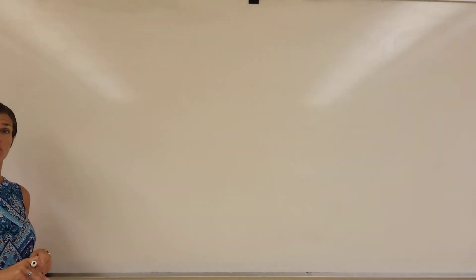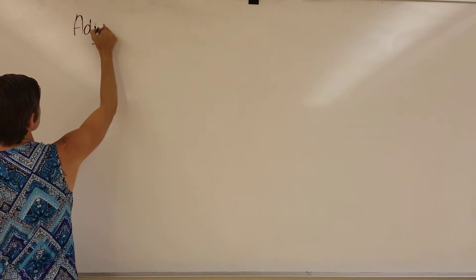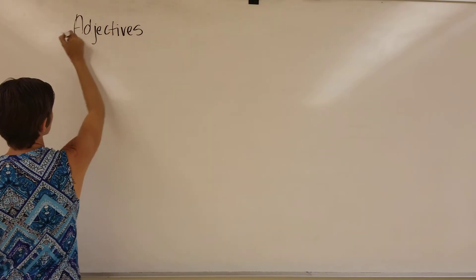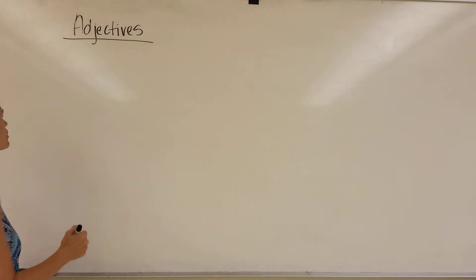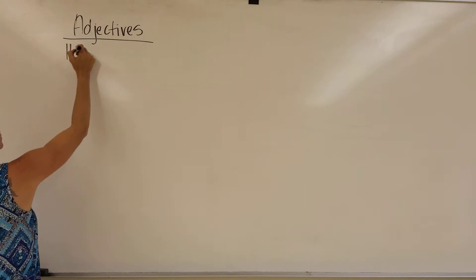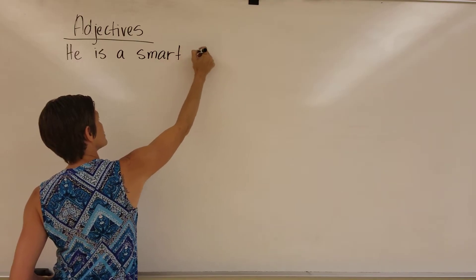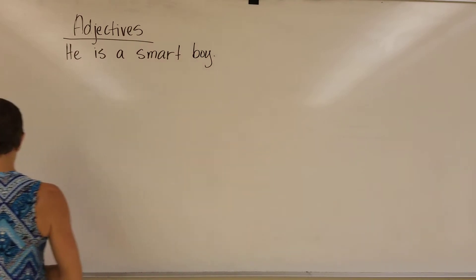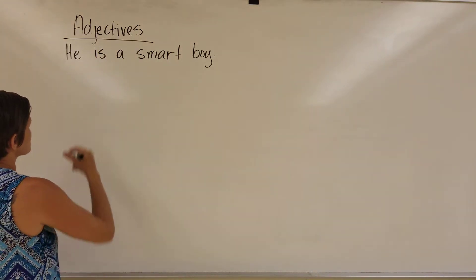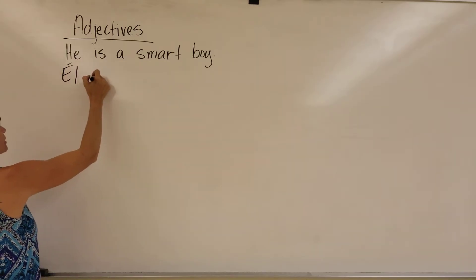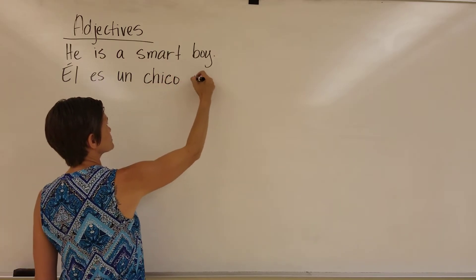We're describing people in Chapter 1D in Spanish 1, and we're going to need to use adjectives correctly. In English, we put adjectives in front of the noun — so we say 'smart boy' with smart before boy. But in Spanish, adjectives come after the noun. For example: 'él es un chico inteligente.'